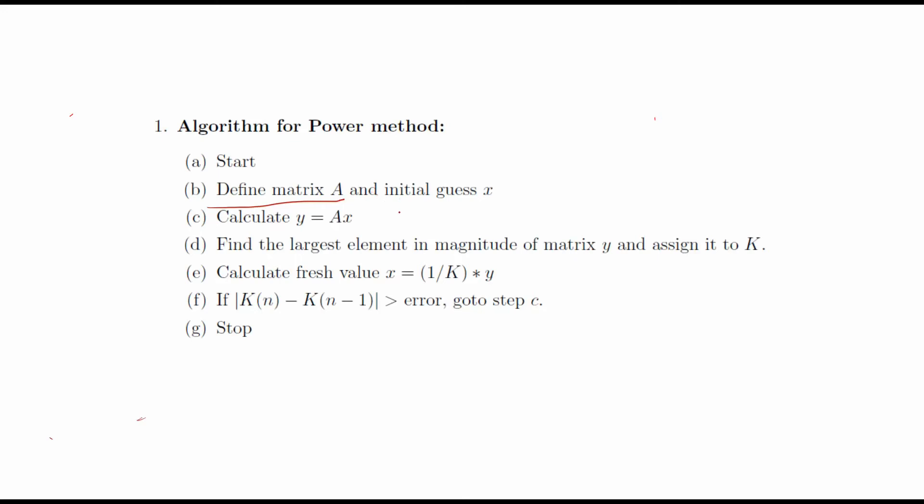Then what we will do, we will calculate A into x and give it the value y. And then we need to find the largest element in magnitude of the matrix y. Find the maximum of y using the infinity norm and assign it a value k. Then you will find the fresh value of x as 1 by k into y.